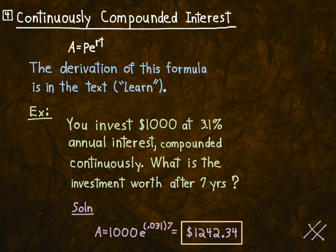Okay, so remember, compound interest — there are two formulas. This is the continuous one. Okay, that's it then for this section. Finally!